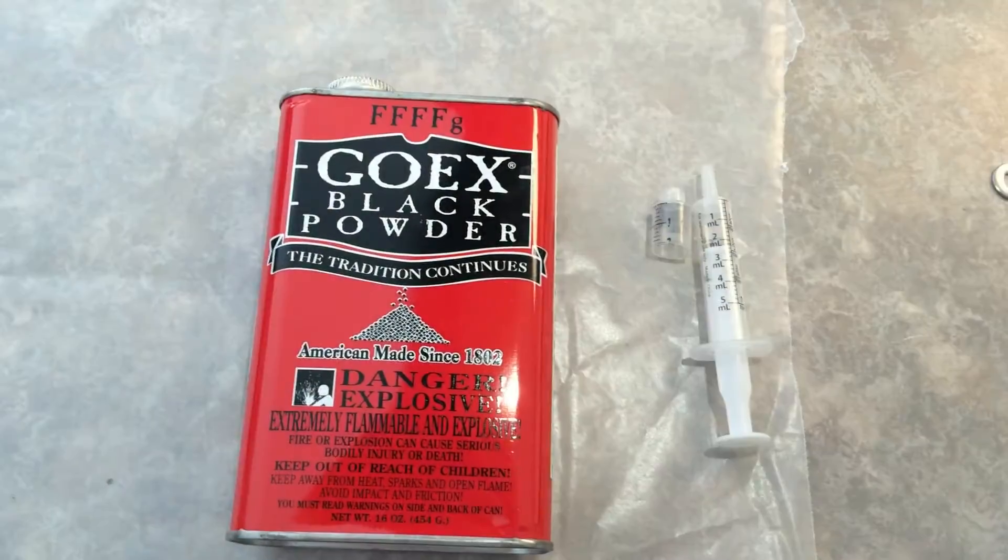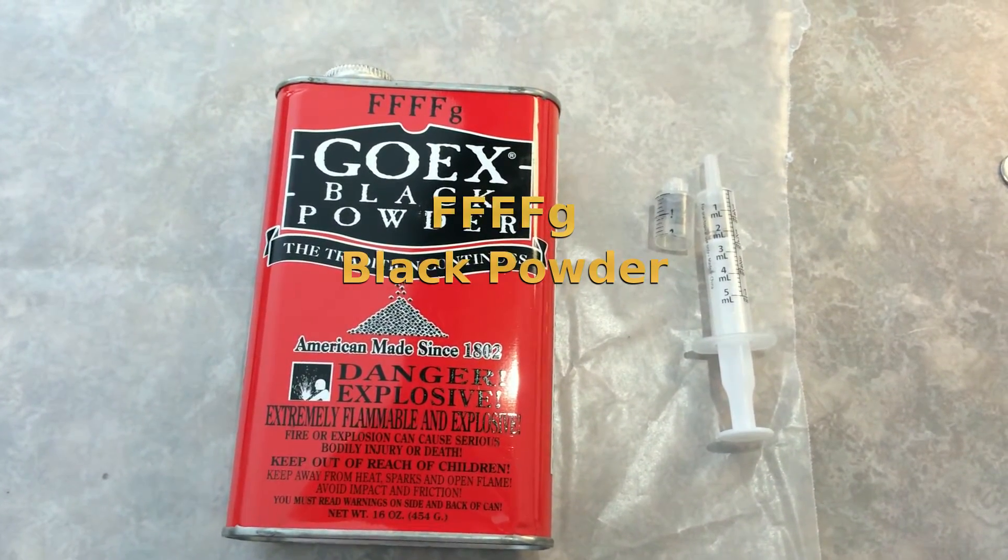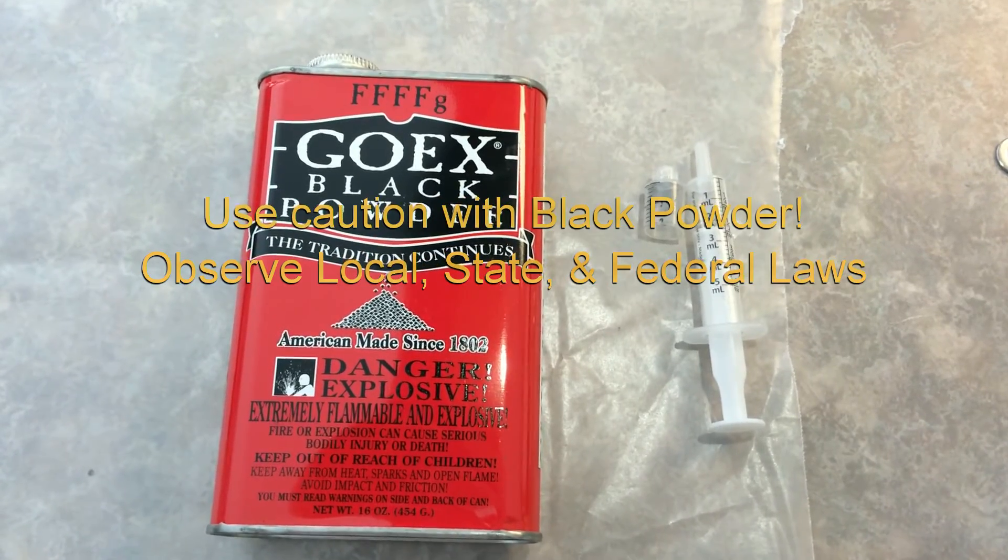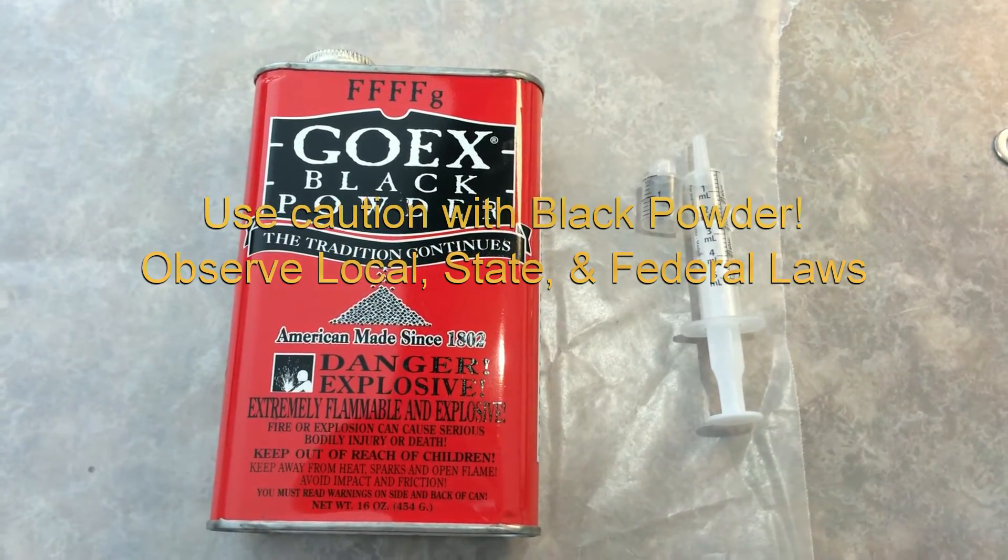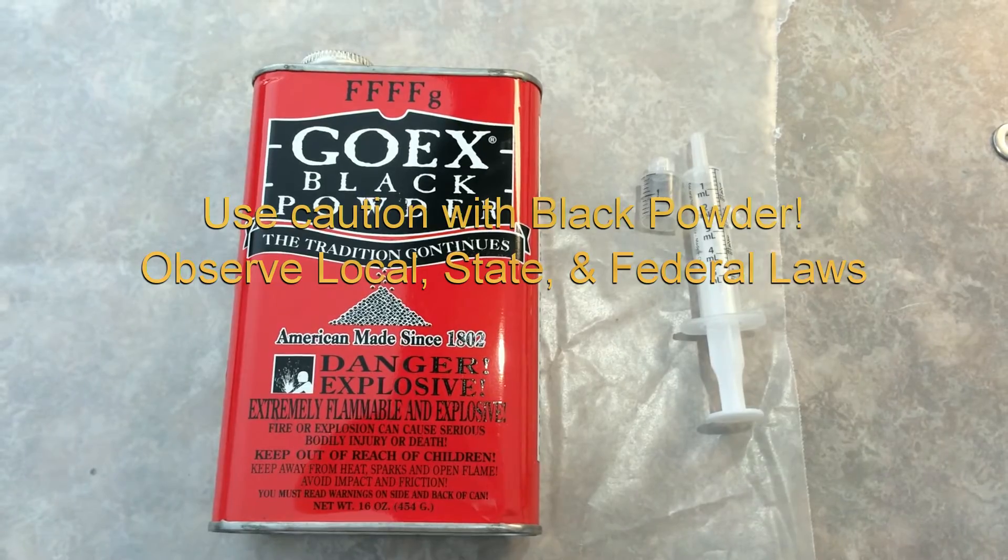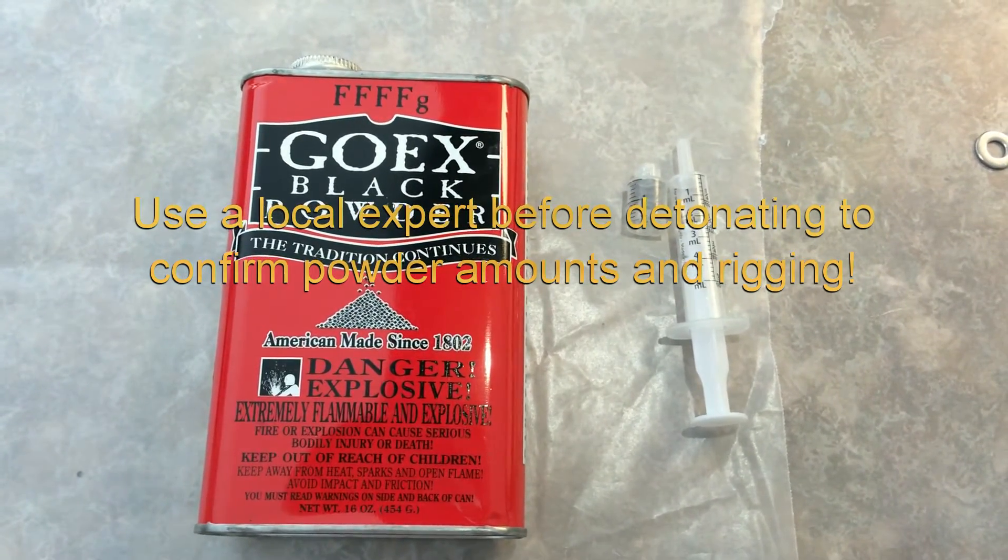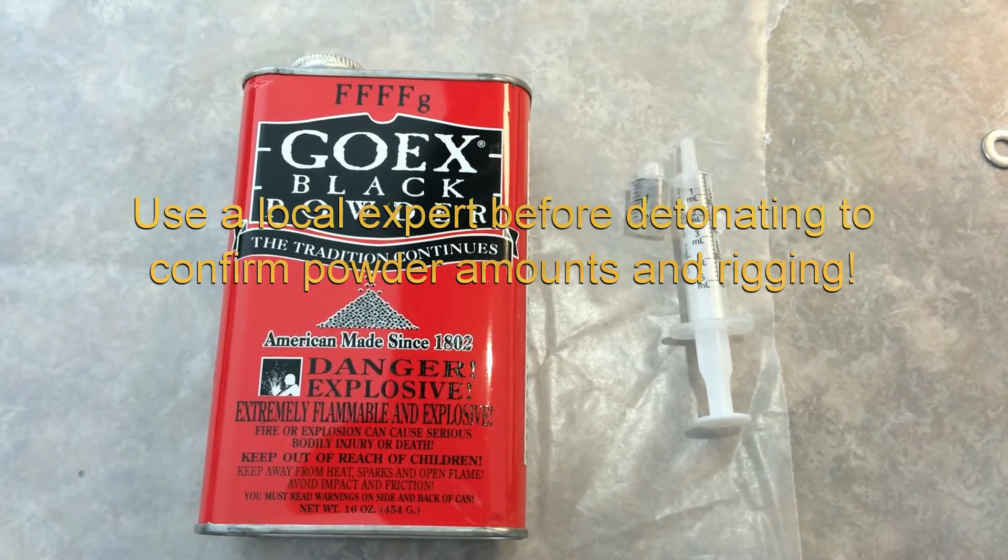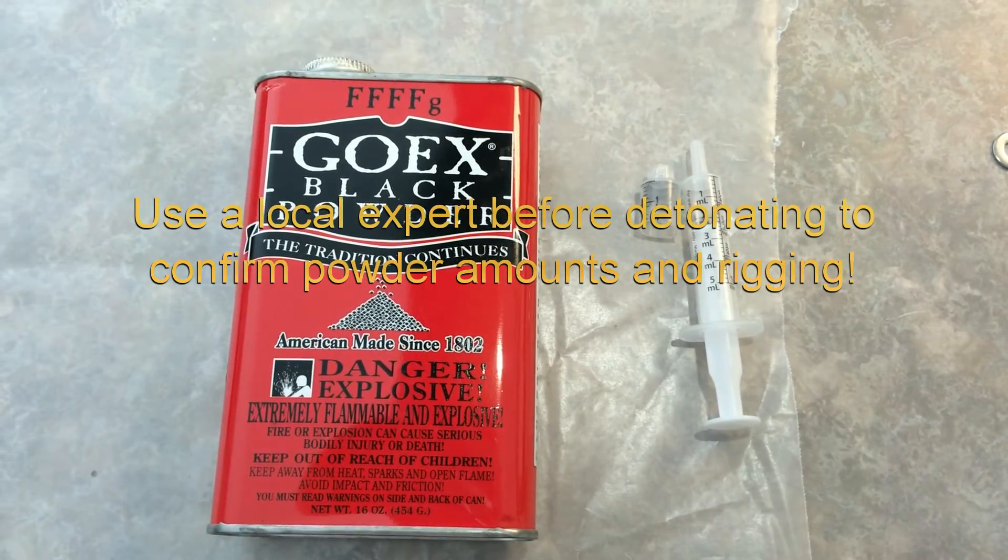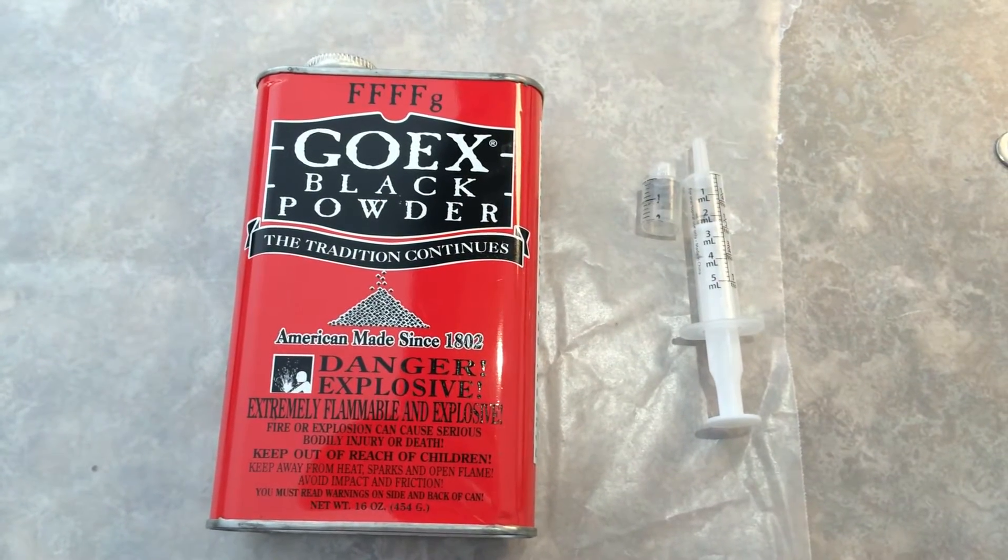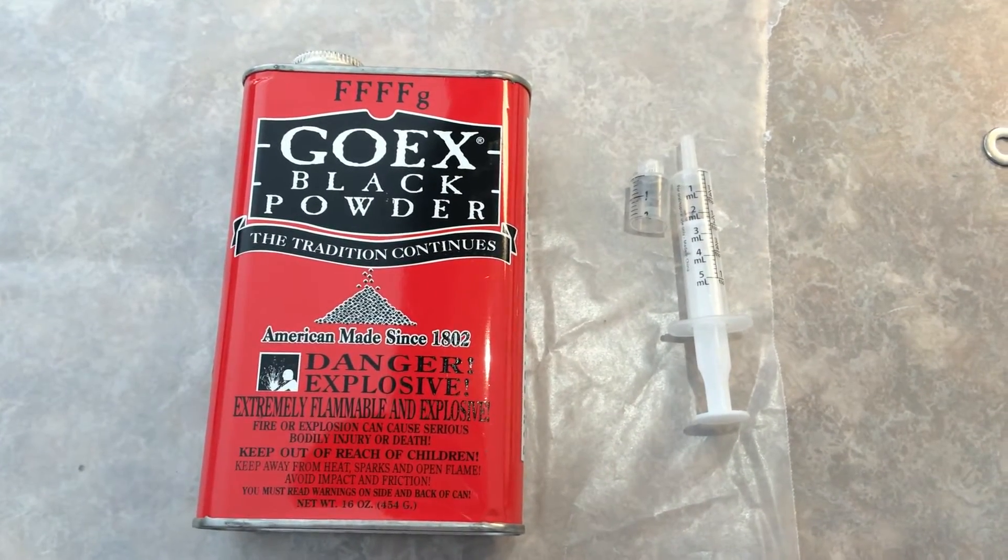Next you want to locate FFFFG black powder. This for me was extremely hard to find. I called all my local pawn shops and gun shops and none of them have it. I ended up having to drive 30 miles to a gun shop in another town to obtain some. Typically this black powder is used for Civil War reloads.